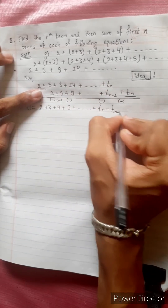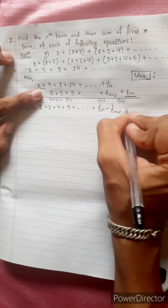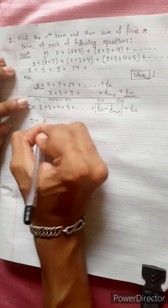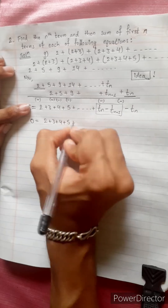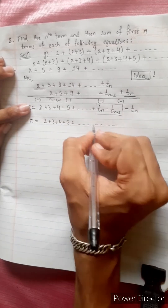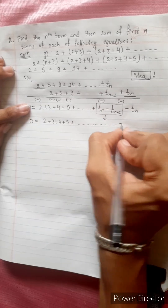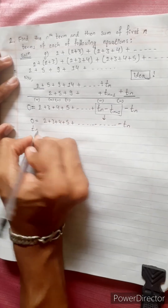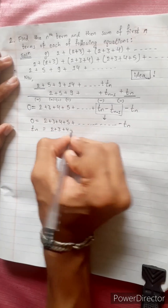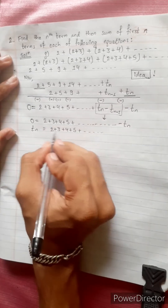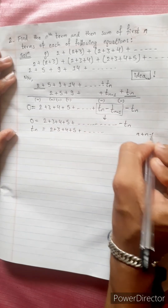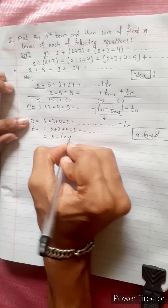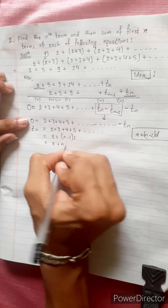Summing up: T_n minus T_(n-1), plus dot dot dot, continuing the telescoping sum. The difference pattern is 2 plus (n minus 1), because the difference increases by 1 each time.